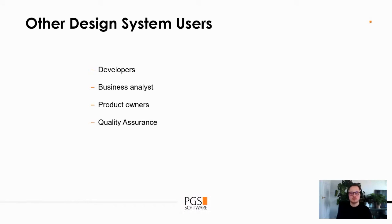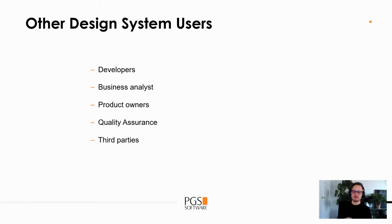Quality assurance teams use the design system to know if all the elements work correctly and whether they contain any bugs. There are also third parties — sometimes you want to outsource some work and expect it to be visually consistent with the rest of your application. You have to keep in mind that communication between an outsource team and your in-house team will not be as seamless, so this tells us we have to focus on documentation, among other things.